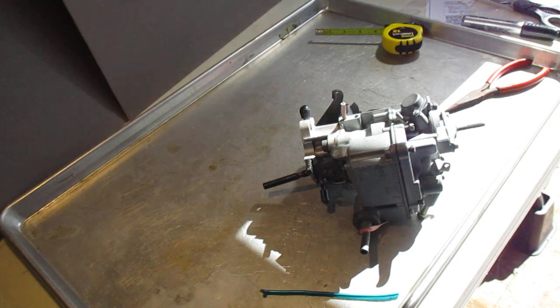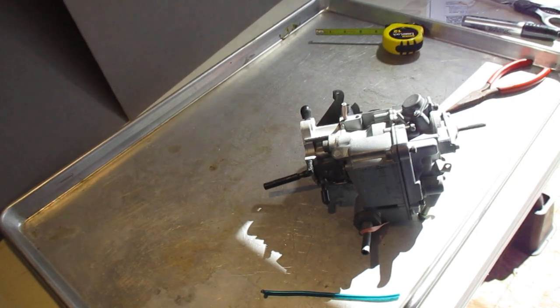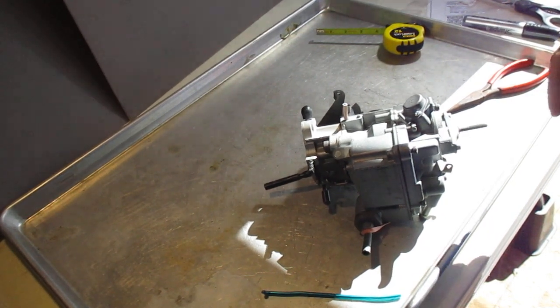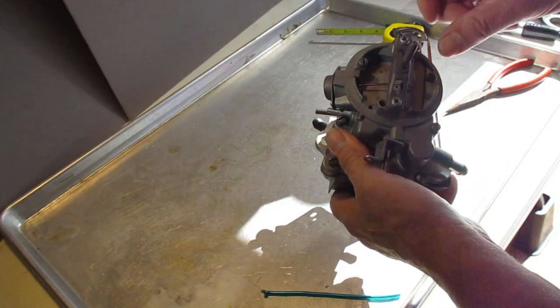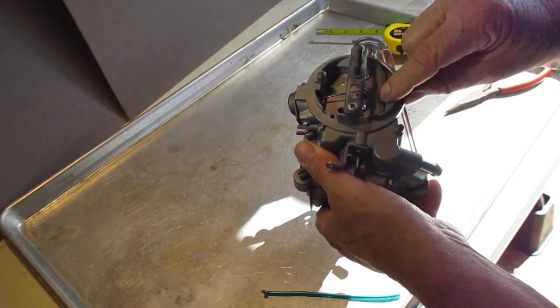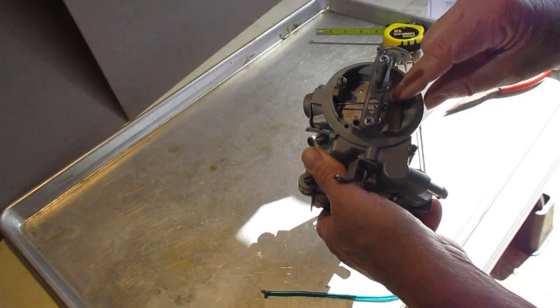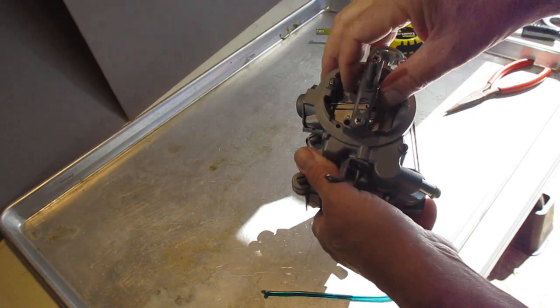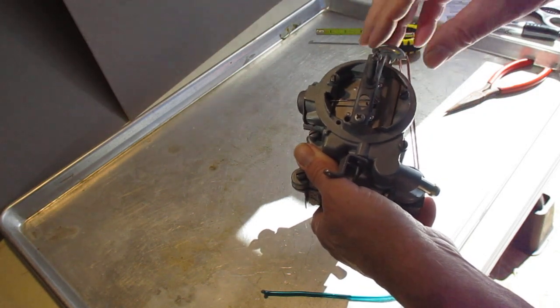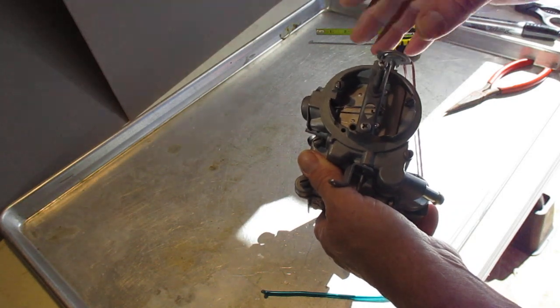When you hear about vacuum brake, choke pull-off, or choke pull-down, they all pretty much mean the same thing. When you step on the gas and the engine is cold and the choke is closed, if you don't get the choke open a little bit, it's going to stall out probably because you don't have enough air.